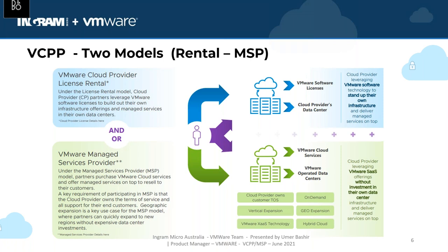On the rental side, the eligibility criteria require that you are a cloud provider leveraging VMware software technology to stand up your own infrastructure. To join the rental part of VCPP you need the ability to either build your own data center or manage your customers' data centers completely. This suits partners with an investment-intensive mindset. On the MSP green side, VMware offers SaaS-based services without requiring too much investment on the data center side — cloud provider leveraging VMware SaaS solutions without investment into their own data center. This is the area we'll be covering today.